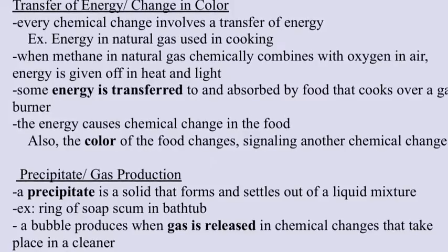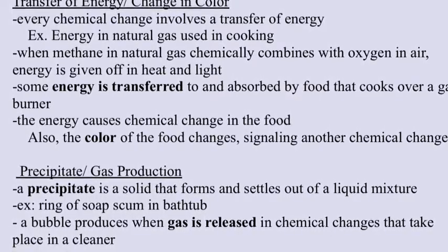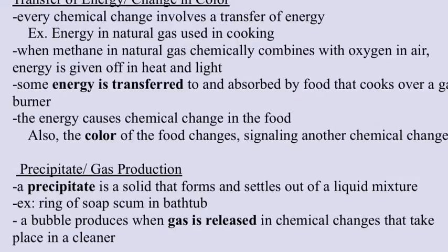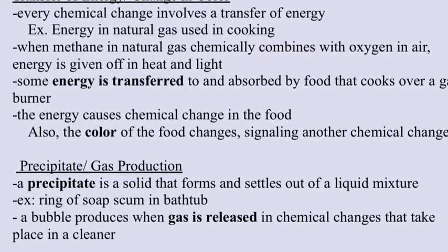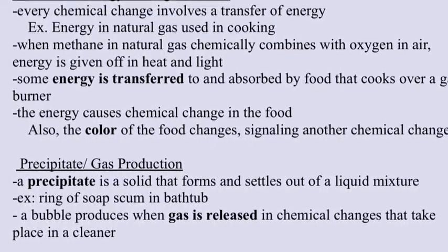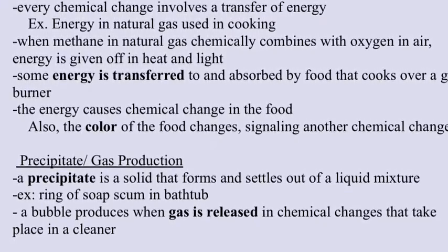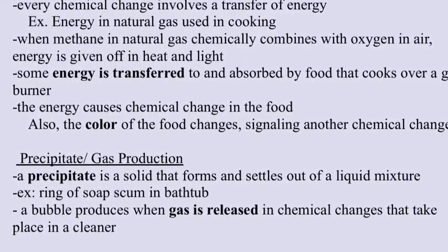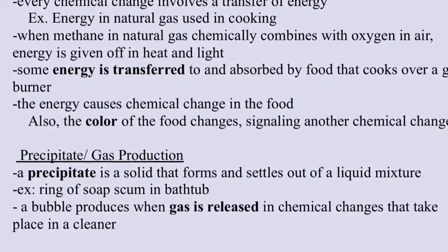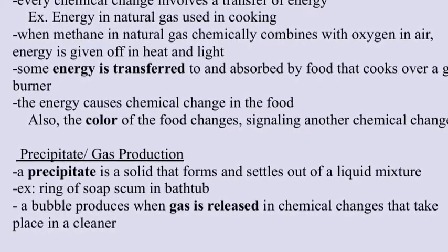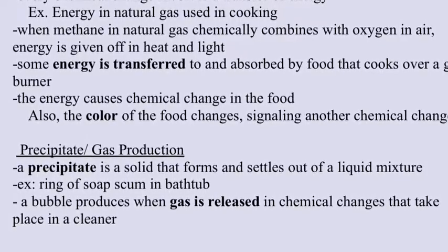Transfer of energy and change in color: every chemical change involves a transfer of energy. When methane and natural gas chemically combines with oxygen in air, energy is given off in heat and light. Some energy is transferred to and absorbed by food that cooks over a gas burner. The energy then causes chemical change in the food. Also, the color of the food changes, signaling another chemical change.